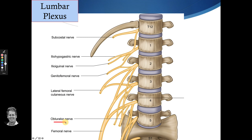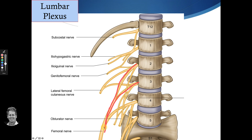The obturator nerve and the femoral nerve all come from the same level. The obturator nerve comes from L2, L3, and also a branch of L4. The femoral nerve comes from L2, with branches from L3 and L4 as well — it's a thicker nerve and comes down mainly for the quadriceps.